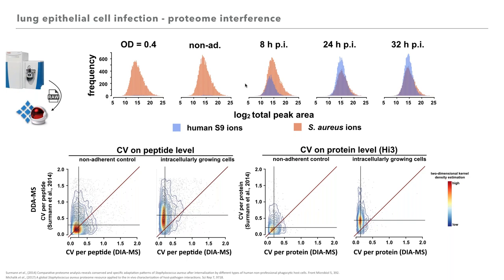We compared the coefficient of variation of peptide and protein intensity data from a previous study done in DDA mode with the DIA-MS workflow — from intracellular growing cells. The DDA-MS is on the y-axis and DIA-MS on the x-axis. The two-dimensional kernel density is plotted in color: more reddish depicts high point density, more bluish displays low point density. The vertical and horizontal black lines depict the median of each axis, and the diagonal of equal CV values in both approaches is shown by the dark red line. We get a drastically lower coefficient of variation with the DIA-MS workflow in samples contaminated with human proteins.